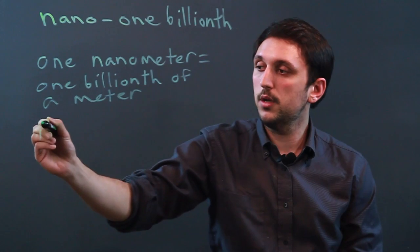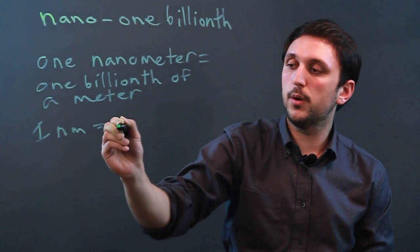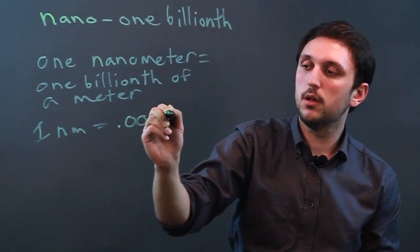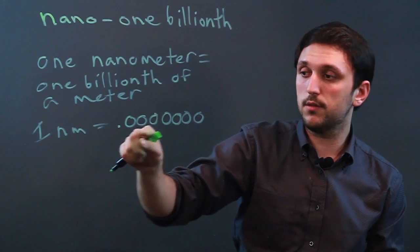Mathematically, we say 1nm equals .00000000. So you start to get lost with these zeros.